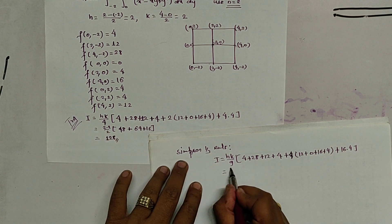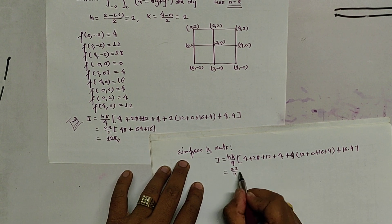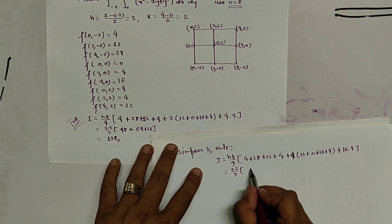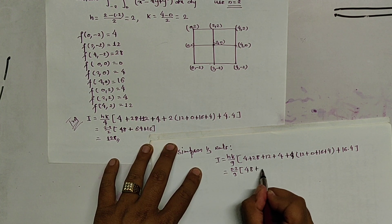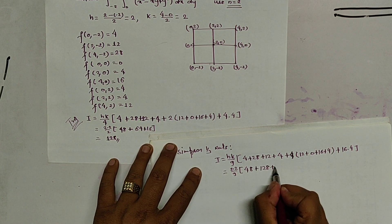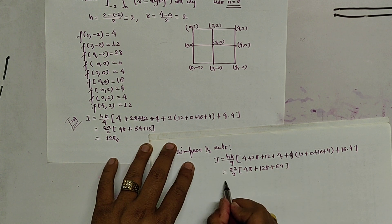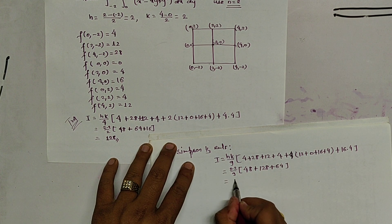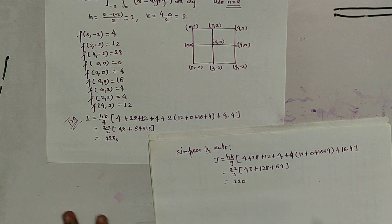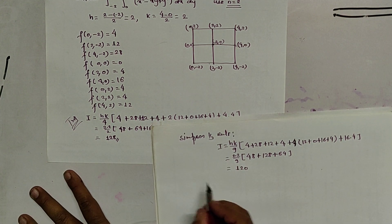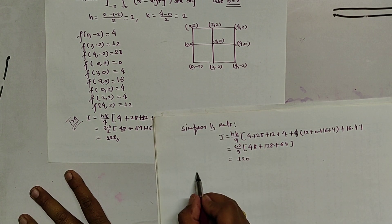And h and k is 2. So, 2 into 2 by 9. And it gives 48 plus 128 plus 64. And it is equals to 120. So, let us check the exact value of the given integration.